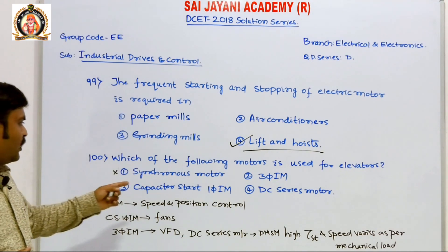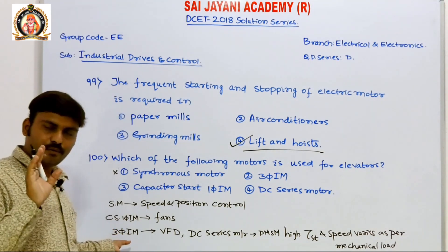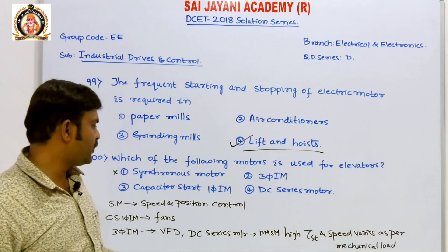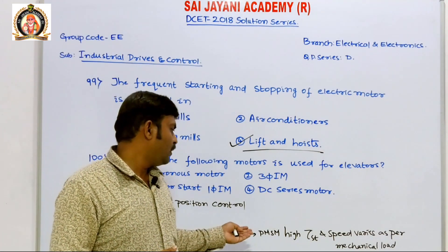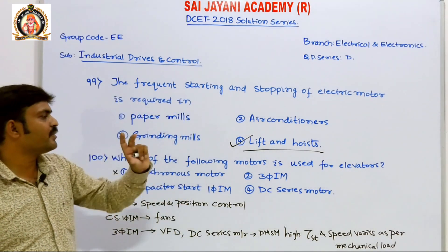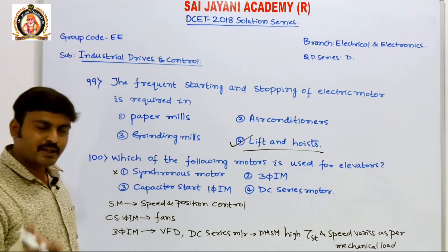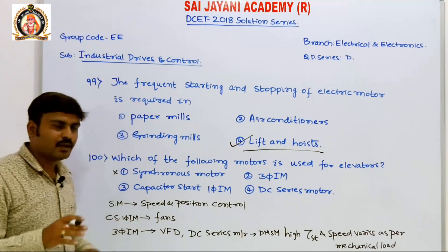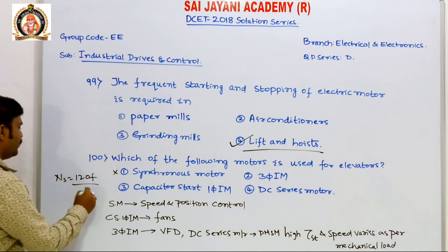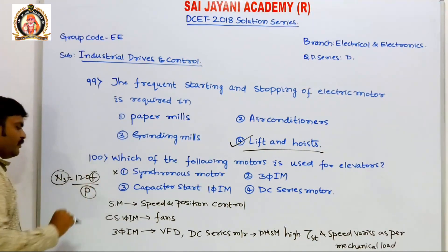Three-phase induction motors can have their speed controlled using variable frequency drives. The synchronous speed formula is ns = 120f/p; p is constant, f is variable. If f can be varied, speed will be varied, and this frequency can be varied with variable frequency drives.